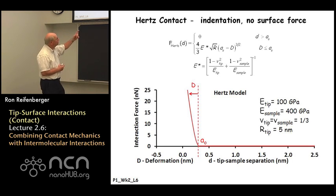I ran through a simple graph to show you what's going to happen. In this particular case, I picked the Young's modulus of the tip to be 100 GPa. The Young's modulus of the sample was 400 GPa, so the sample is pretty hard. The Poisson's ratio for both the tip and sample are set to one third, a typical value. The tip radius is about 5 nm. Once the tip comes into contact with the substrate at position a0, the deformation that results for a particular applied force F is shown in this graph.